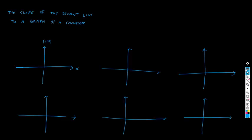Hello, guys. Welcome to today's lesson. Today we will see the following topic: the slope of the secant line to a graph of a function. I know it looks like a very long title, but the idea behind this is very simple. You already know what slope is, and you already know what a secant line is, and of course you know the idea behind the graph of a function. So let's talk about this concept.